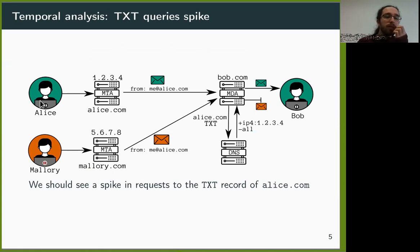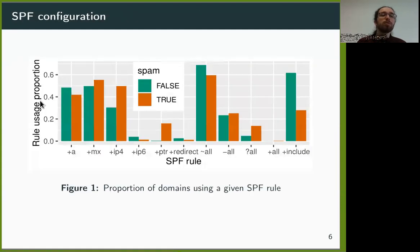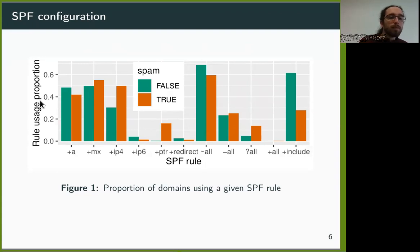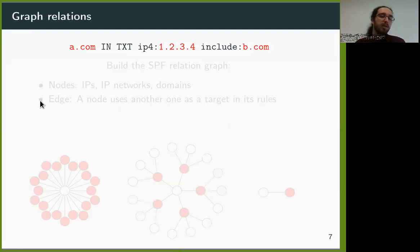We also detected that the SPF rules used by spam domains tend to be different from the rules used by benign domains. We saw that some rules, like the +ip4 rules, are more common in spam domain configuration than rules like the +include, that are more often used by benign domains. We also analyzed the targets of these rules — what IPs are whitelisted and what domains are included.